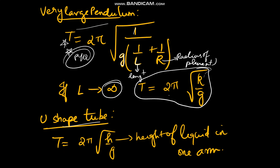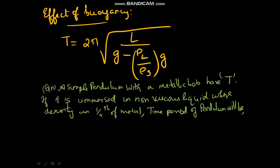In a U-shaped tube, the time period is given by 2π√(h/g), where h is the height of the liquid in one arm. Regarding the effect of buoyancy: if a solid is floating in a liquid and exhibits SHM, the time period is given by 2π√(L/(g − (ρ_liquid/ρ_solid)·g)), which simplifies to 2π√(L/g(1 − ρ_liquid/ρ_solid)).